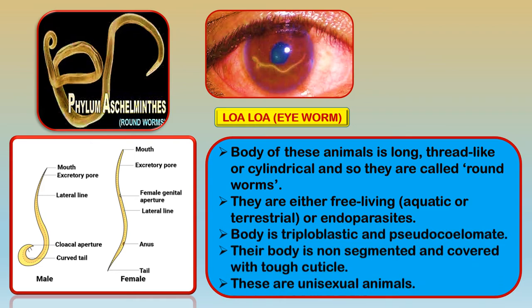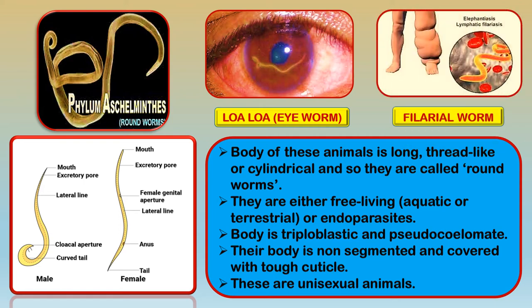The body is non-segmented and covered with a tough cuticle — a hard substance similar to our nails, giving support to the body. They are unisexual animals, meaning they have separate male and female. Another example is the filarial worm, which is also an endoparasite and causes a well-known condition in human beings.